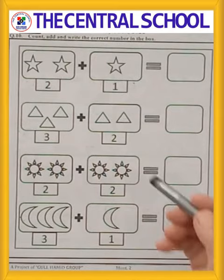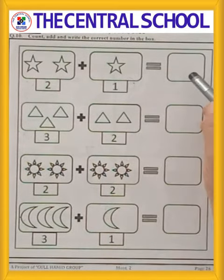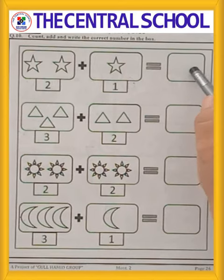What you have to do? You have to count the given objects and then write the correct number in the box. Let's start.